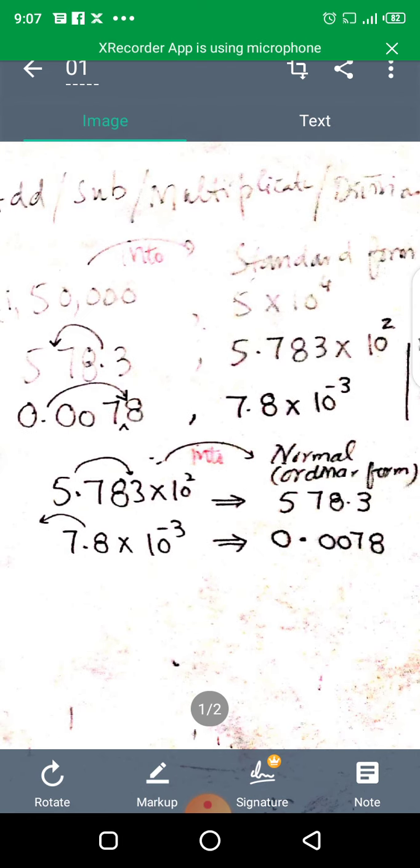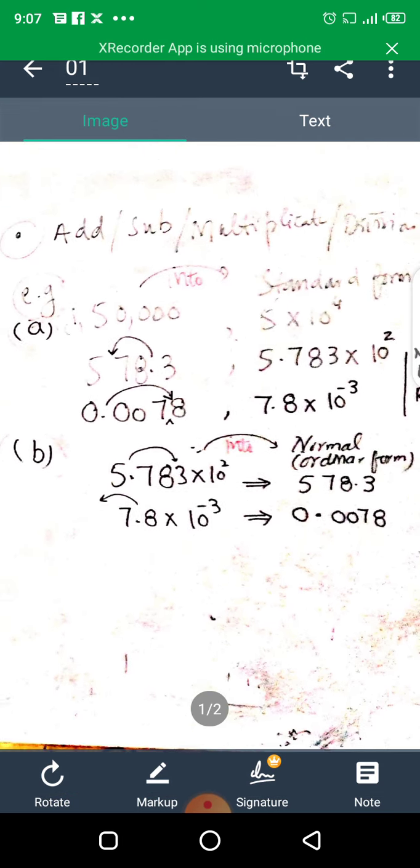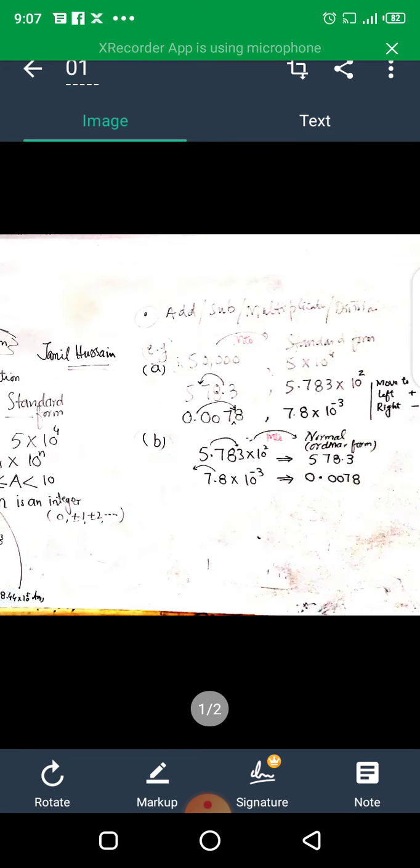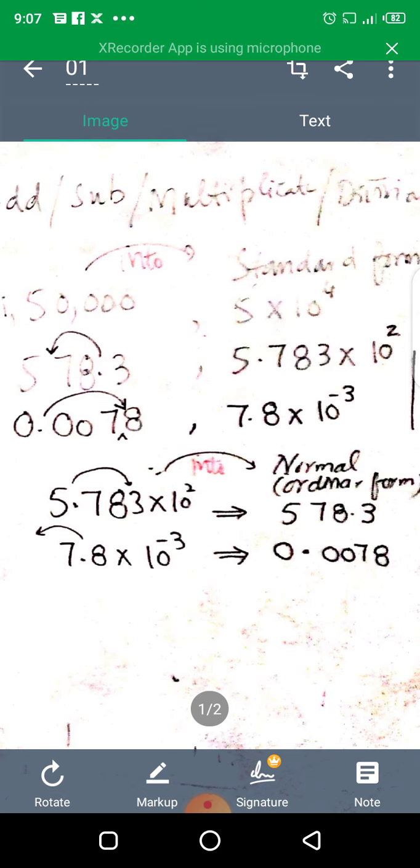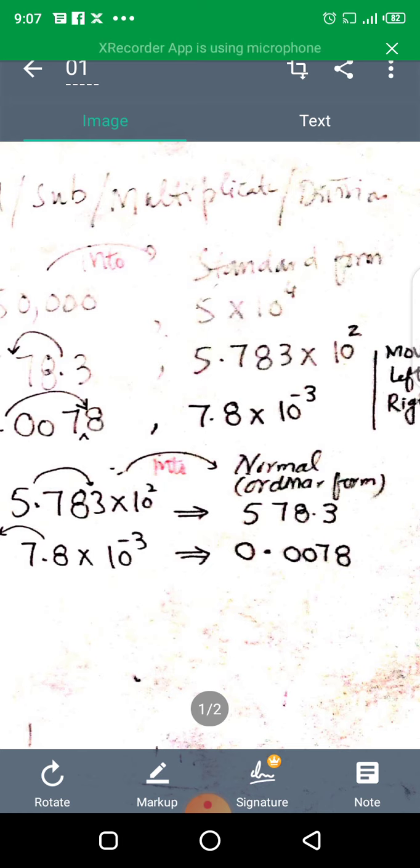Similarly, the second part is that we have given a standard form or normal form to convert into ordinary form. That is 5.783 multiply by ten raised to power two. If we have left move, then power will be positive.